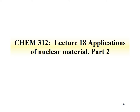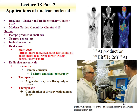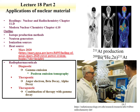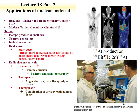Welcome to the second part of Lecture 18 for Chemistry 312, Radiochemistry. This lecture is on applications of nuclear materials. Part 2 focuses on radiopharmaceuticals. We'll discuss diagnostic radiopharmaceuticals — those that emit photons and are used to understand function in the body. We'll also discuss therapeutic radiopharmaceuticals — isotopes that emit Auger electrons, beta particles, or alpha particles, which are used to kill cancer cells and provide a therapy.